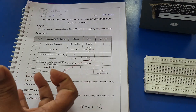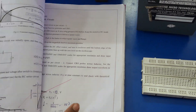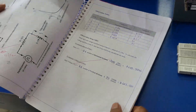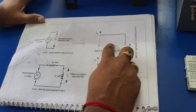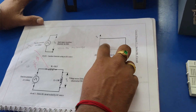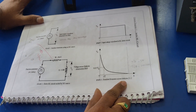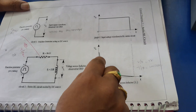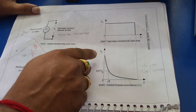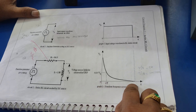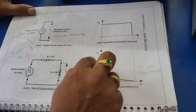First, what is meant by transient response? Transient response is nothing but the response of the system that depends on time. Here two graphs are shown — one is related to input and another to output. Observe the output graph: when time is zero the response is high, and as time changes the response also changes with respect to time. This response is called the transient response.